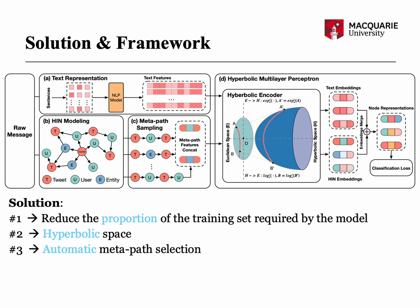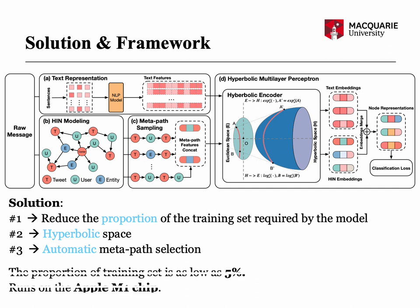We embed the features into hyperbolic space instead of Euclidean space to reduce the distortion of the feature embeddings. Finally, an attention mechanism is used to determine the optimal weights of the metapaths. Overall, our framework maintains the learning ability of the model when the training set accounts for 5%, and achieves good performance when the training set accounts for 20%. The framework can run smoothly on the Apple M1 chip when training on a dataset of about 16,000 tweets.